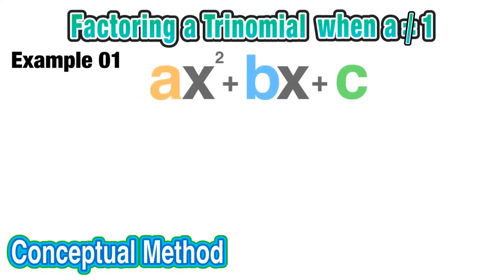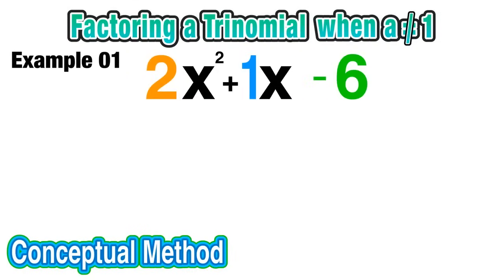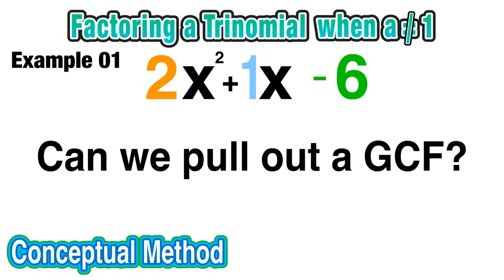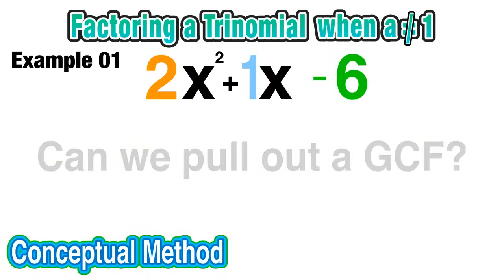So for our first example, we're going to use the conceptual method to factor the trinomial 2x²+x-6. First of all, we should notice that our a term, our leading coefficient, is 2, which obviously does not equal 1, so our normal method of factoring is not going to work on this example. Next we should ask ourselves: can we pull out a GCF? We should notice that there is no common factor between 2, 1, and -6, so we actually cannot pull anything out.